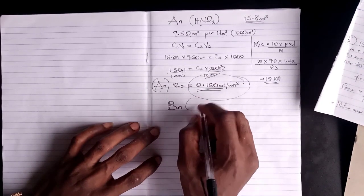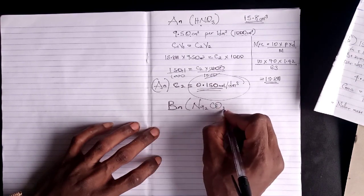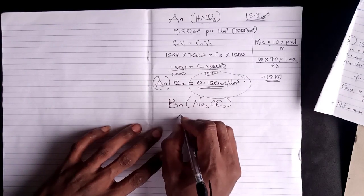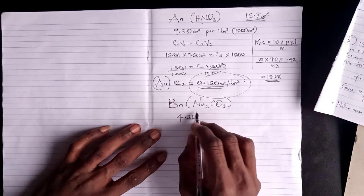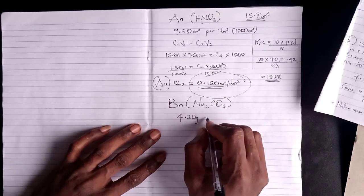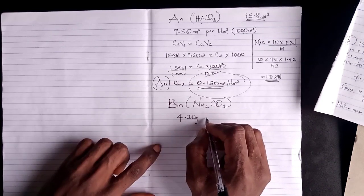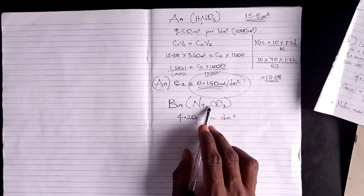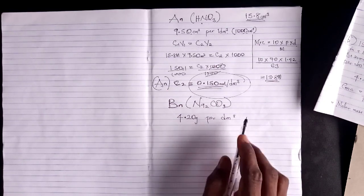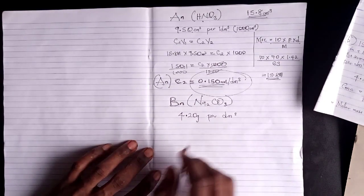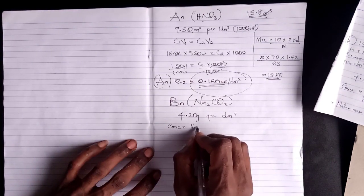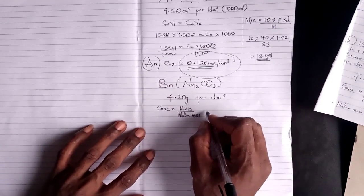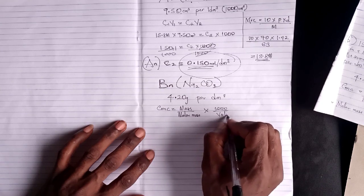BN is your base, the carbonate — sodium trioxocarbonate(IV), also known as washing soda. According to the instruction, you weigh out 4.20 grams of sodium trioxocarbonate(IV) and dilute to one dm³. So if you weigh out 4.20 grams and dilute to 1 dm³, what will be the concentration of the solution? The formula to use is: concentration = (mass / molar mass) × (1000 / volume).